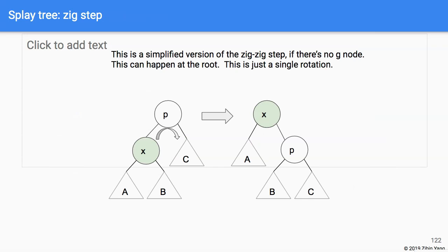There is also the simplified zig case — just a single rotation. This occurs when there is no grandparent node, meaning p is the root and we only need to bring x up one level.